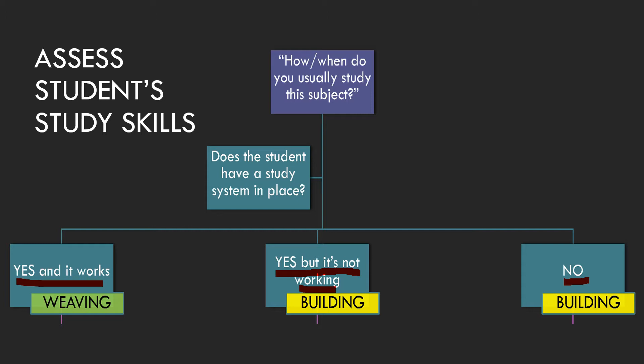One is weaving, and one is building — building is for the other two. Weaving is what you're going to be doing if the person does have a study system in place and it's working. If you think of weaving a basket, there's already a structure and a framework there. All you have to do is weave into it, filling in the gaps — explaining problems, giving practice problems, or showing them how to do something.